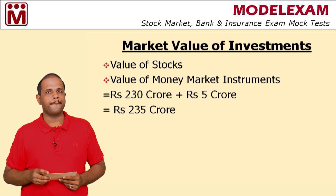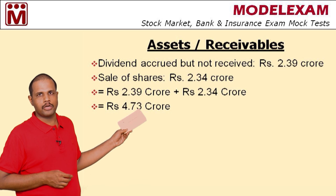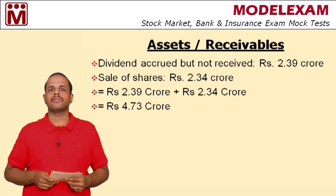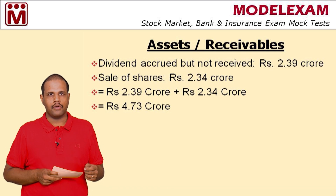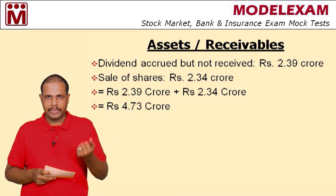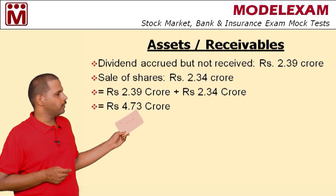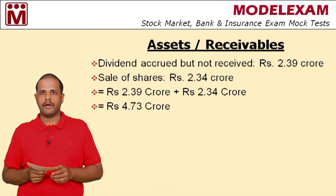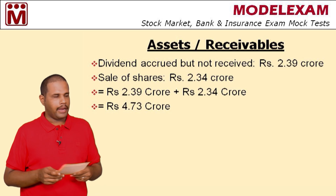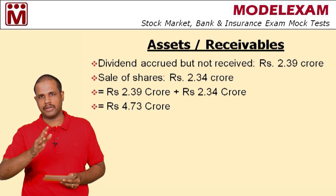The second part is assets or receivables. Dividend accrued but not received is Rs. 2.39 crore. Sale of shares is Rs. 2.34 crore — once we sell a share, we are bound to receive that amount, so it is treated as a receivable. Adding these two gives a total of Rs. 4.73 crore for the assets or receivables portion.